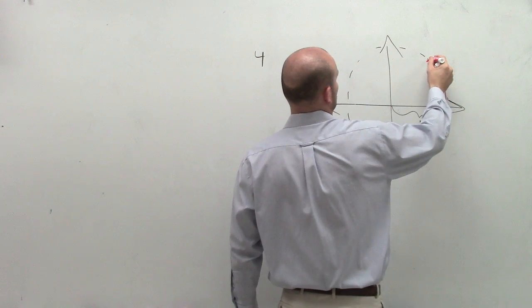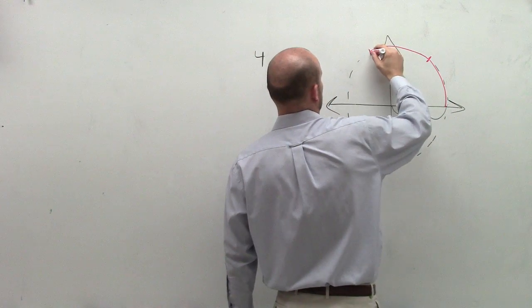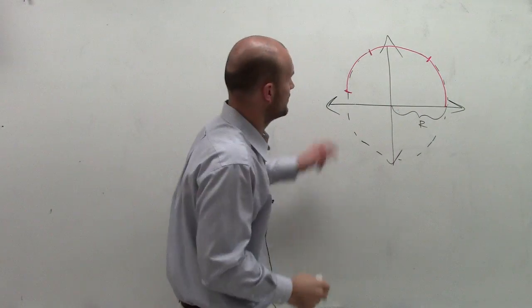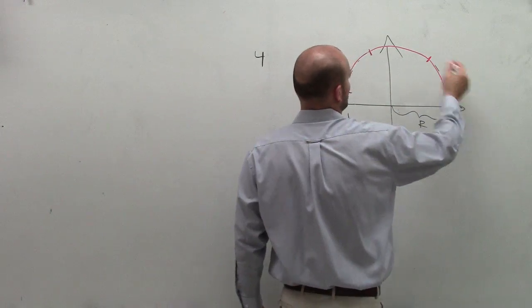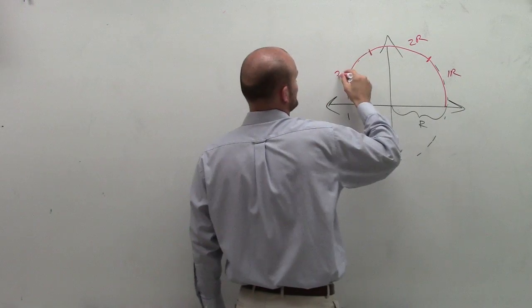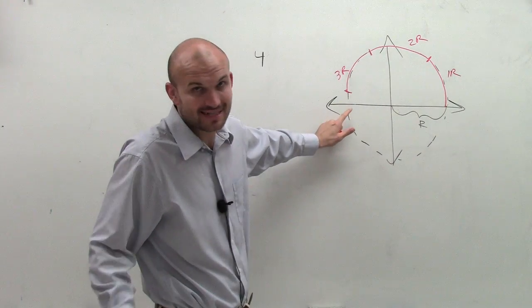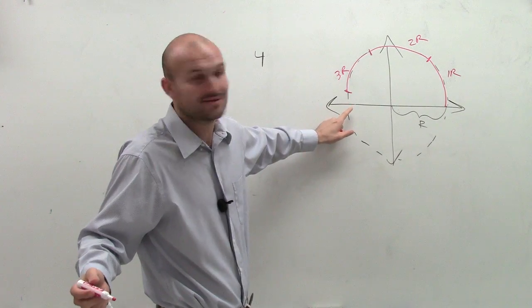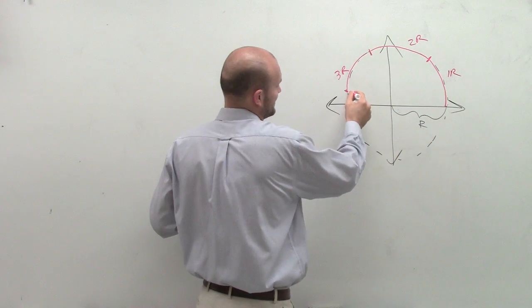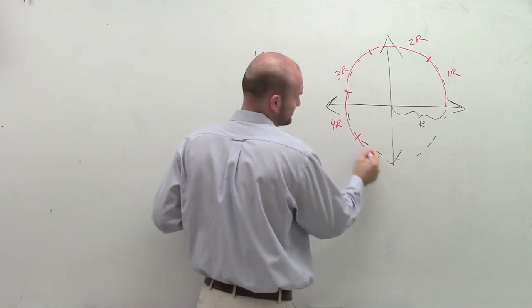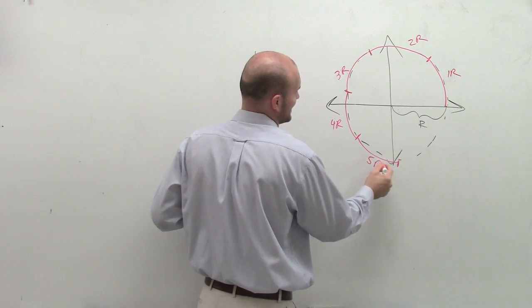So it's going to look something like one. So this distance would be one radian, two radians, three radians. So that's one radian, two radians, three radians. Halfway around the circle is 3.14159 dot dot dot radians. And then the next one would be four radians, five radians.